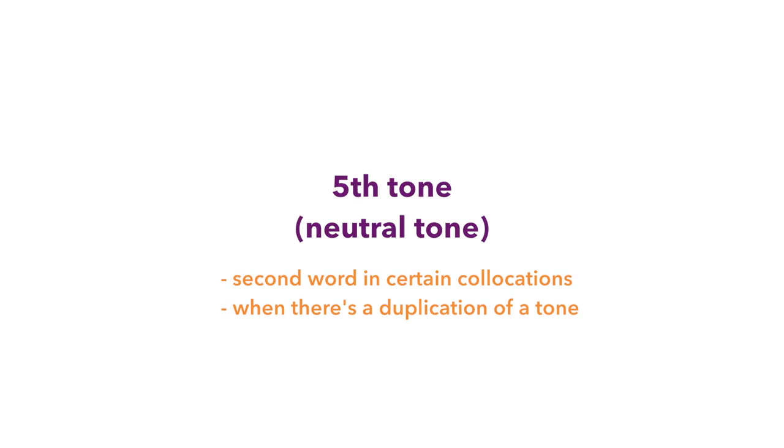Fifth tones usually occur in the second word in certain collocations, or when there is a duplication of a tone. For example, the colloquial word for father in Chinese is ba. However, instead of it being ba ba, the second fourth tone is dropped to make it ba ba.